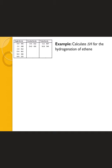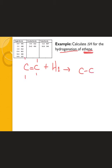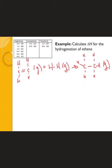For our first reaction, we're going to calculate the enthalpy of the hydrogenation of ethene. We know ethene has two carbons with a double bond — it's an 'ene' — and two hydrogens on each carbon. Hydrogenation just means we're adding hydrogen, which always comes as a diatomic molecule. With these extra hydrogens, we no longer need the double bond, and each carbon can have three hydrogens, so we get single-bonded ethane as a product.